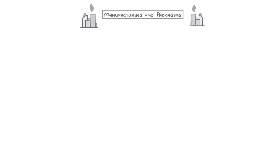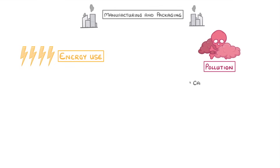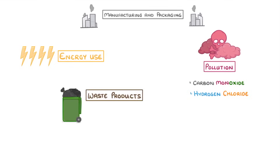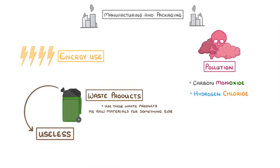Next, let's look at manufacturing and packaging. The three main problems are energy use, the release of pollution like carbon monoxide or hydrogen chloride, and the production of waste products. Sometimes we can use these waste products as raw materials for something else, but usually they're useless and they have to be disposed of.